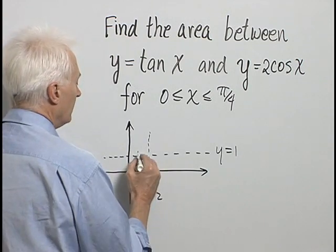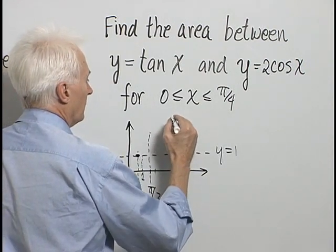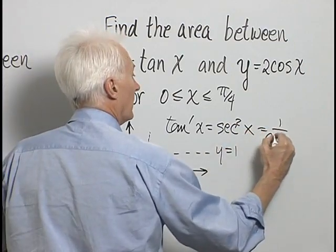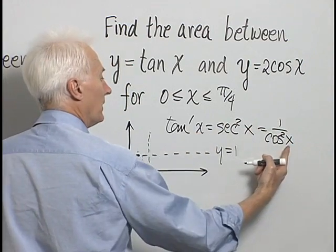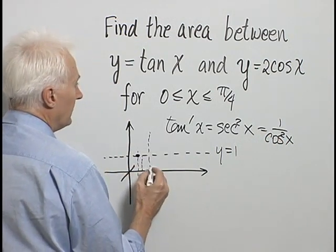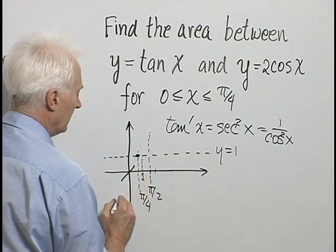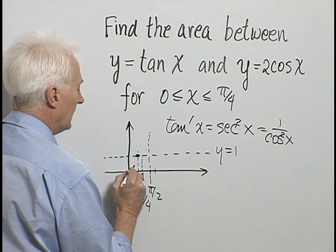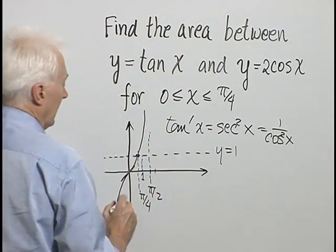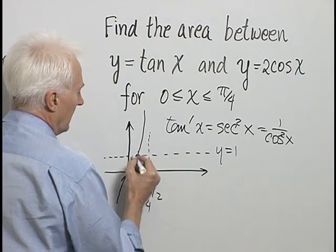Tangent of pi over 4 is 1, so the graph of tangent goes through that point. The derivative of tangent is secant squared, which is 1 over cosine squared. When x equals 0, cosine of 0 is 1, so the slope of the tangent is 1 right at the origin. Since tangent is sine over cosine and cosine of pi over 2 is 0, as we approach pi over 2, tangent goes off to infinity. During the interval 0 to pi over 4, the tangent of x is between height 0 and 1.